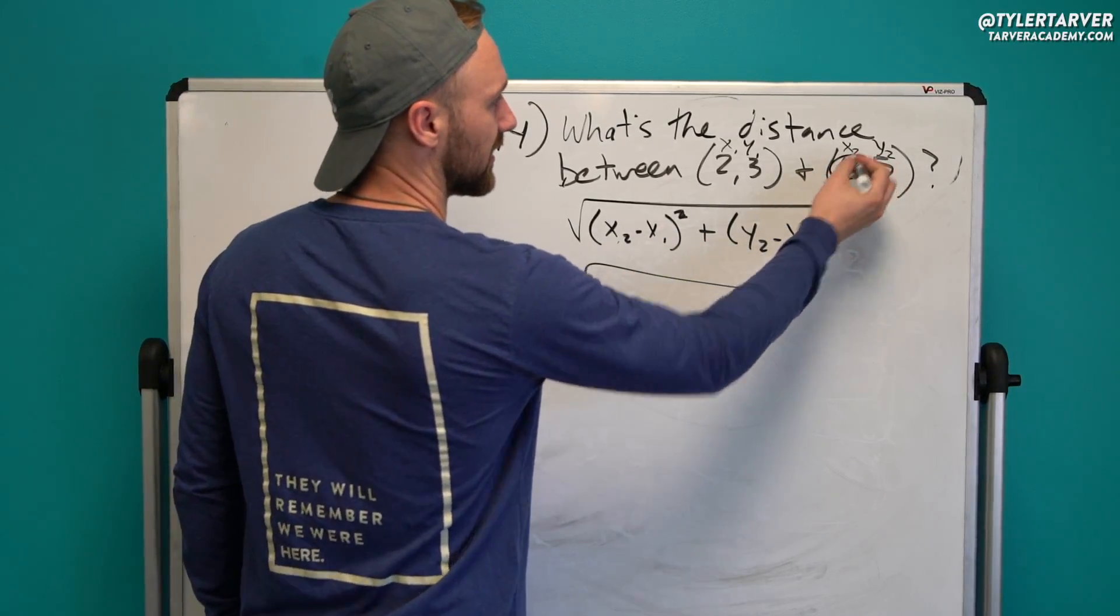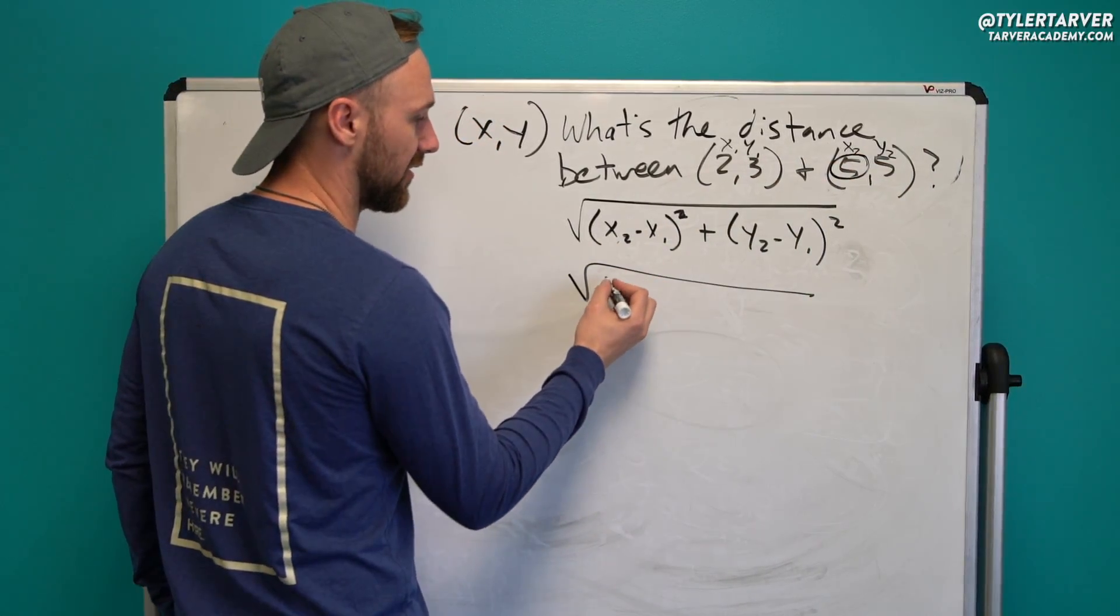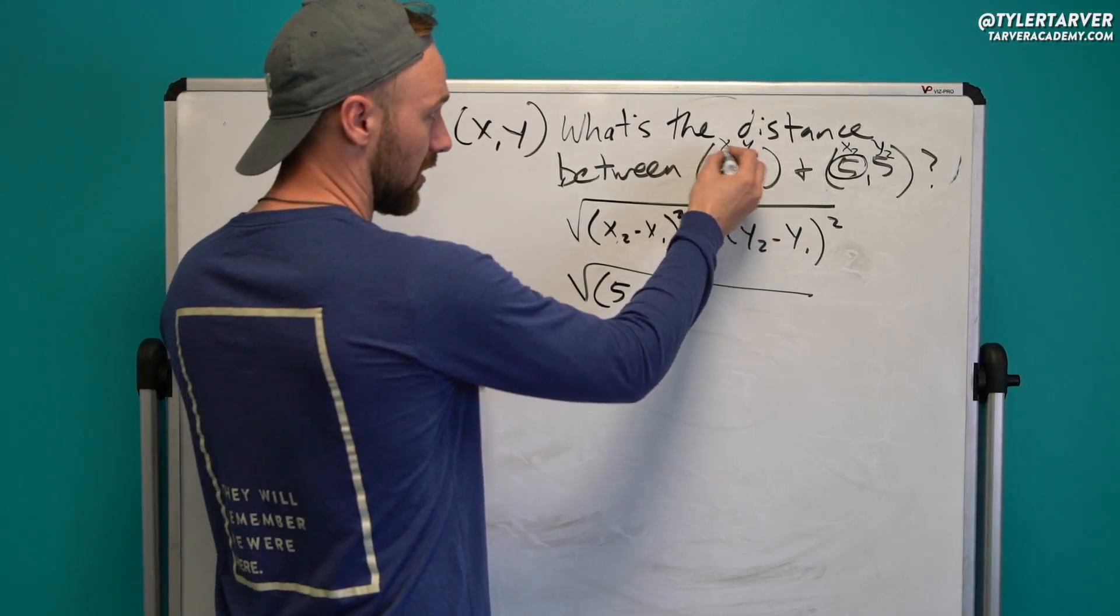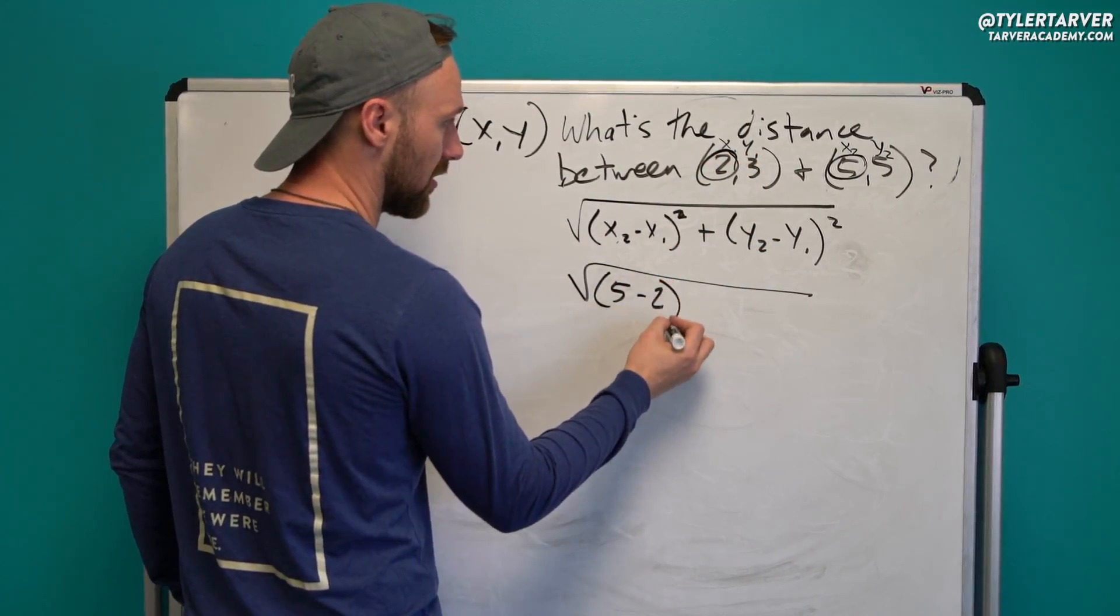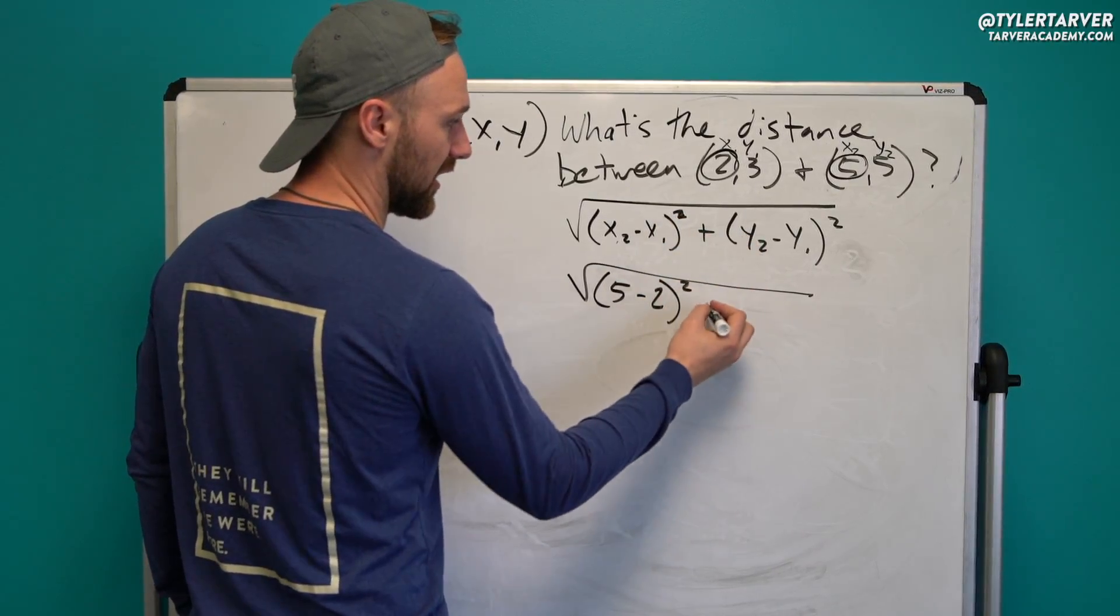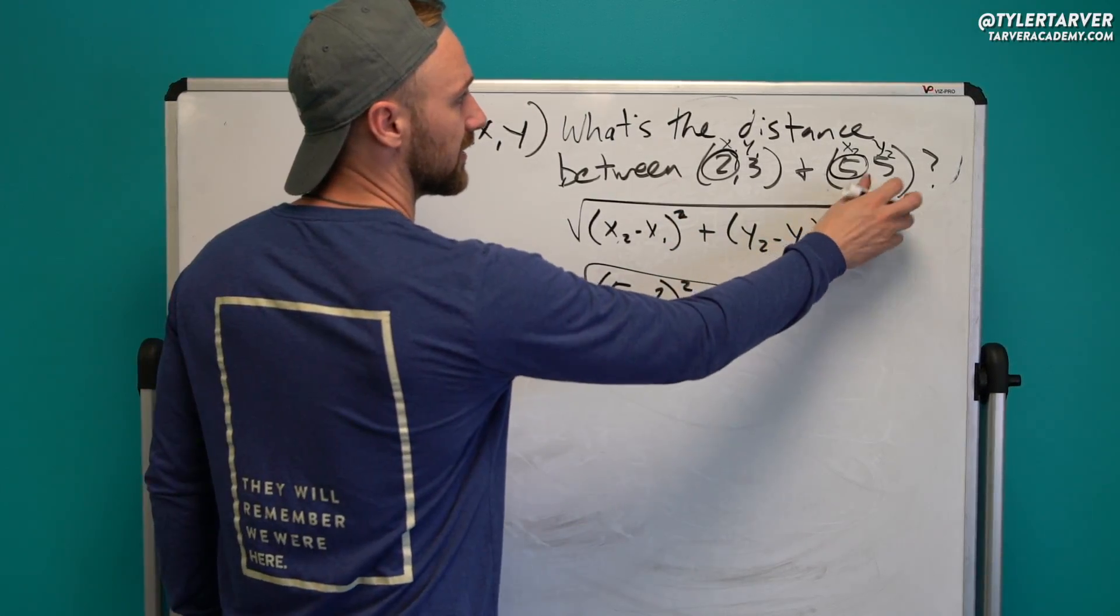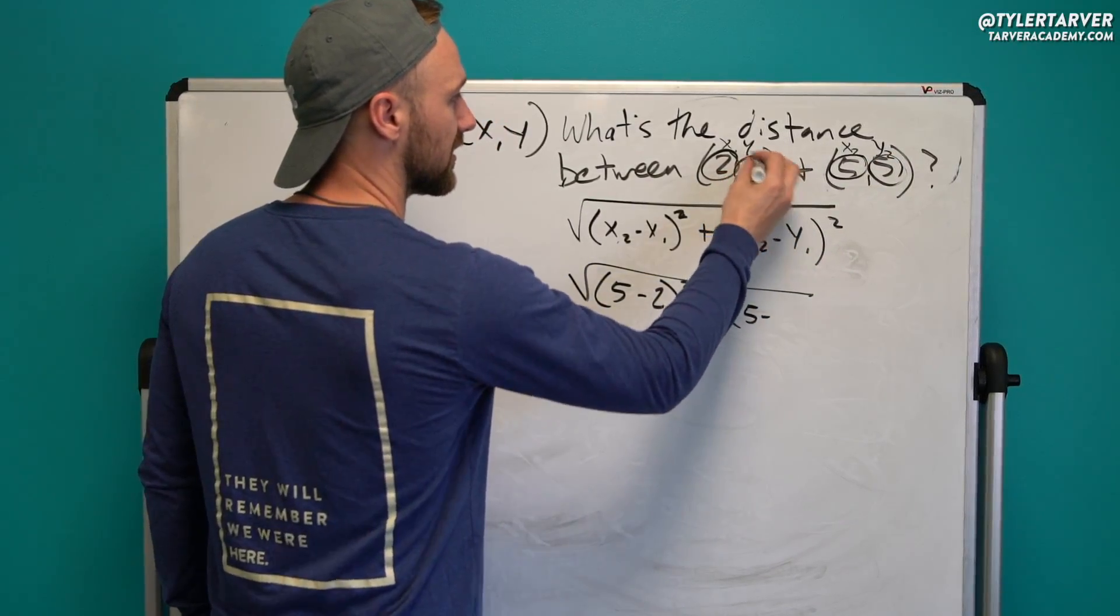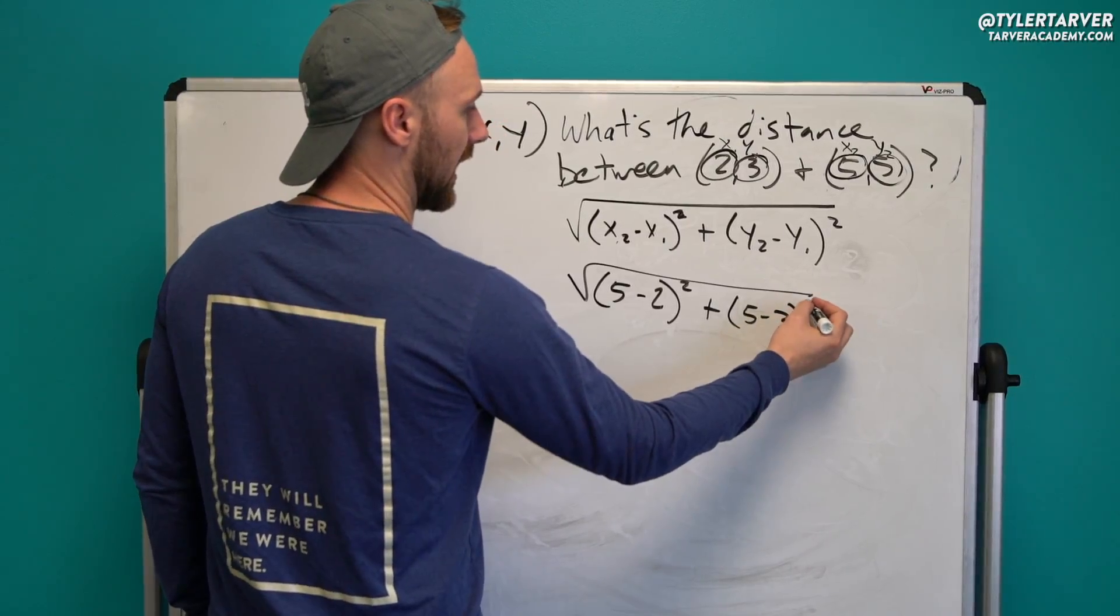x2 is five. I circle also to make sure I used everything. So five minus our x1 is two squared plus, then you got y2 is five minus our y1 is three squared.